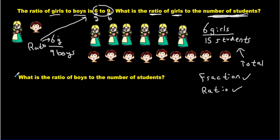Now let me go on to the next one here. What is the ratio of boys to the number of students? Well, that's going to be simple because we have 9 boys, and we have 15 students. That's it.